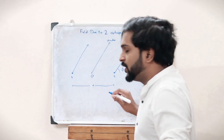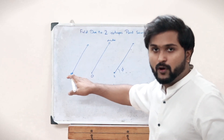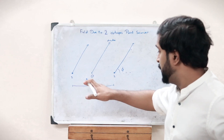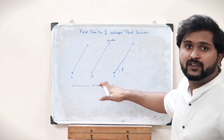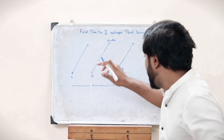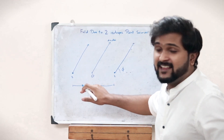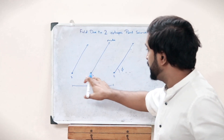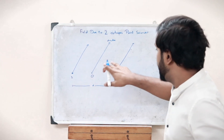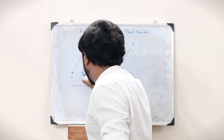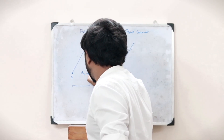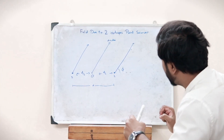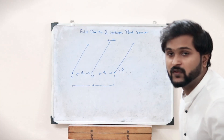The distance between each point source and the origin is exactly half the distance between the two point sources. That is, if the total separation is d, then each source is at a distance d/2 from the origin.